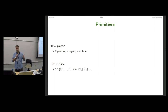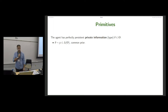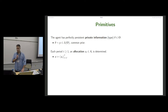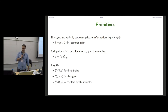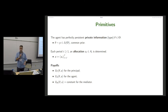Let me formalize the model, which describes the mediator approach to mechanism design with limited commitment. There are three players: a principal, an agent, and a mediator. Time is discrete and the horizon can be either finite or infinite. The agent has perfectly persistent private information theta, distributed according to a common prior mu. Each period an allocation is determined; players' payoffs depend on the agent's private information and the realized sequence of allocations.